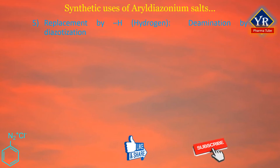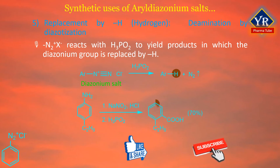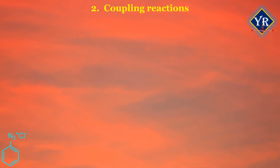Replacement by hydrogen: aryl diazonium salts react with hypophosphorous acid to yield products in which the diazonium group has been replaced by hydrogen. In effect, this is a reduction of the aryl diazonium ion. This reaction provides a useful method for the removal of an amino group from an aromatic ring.